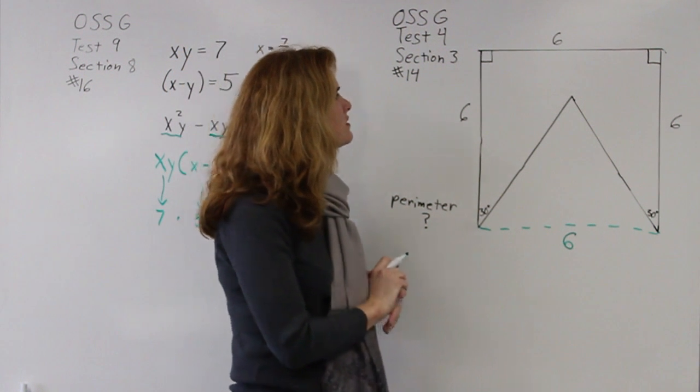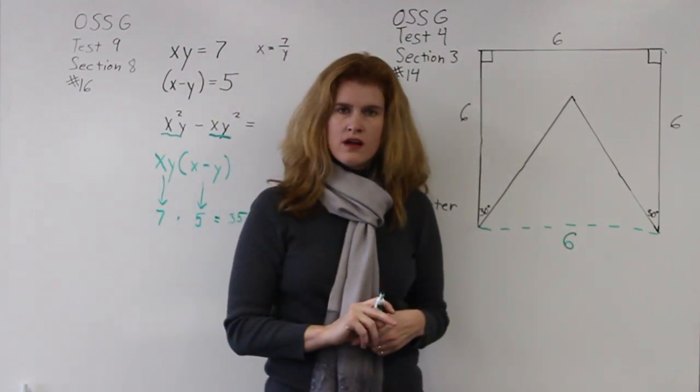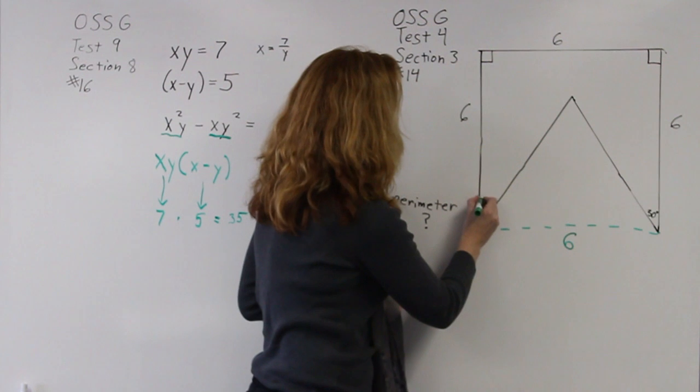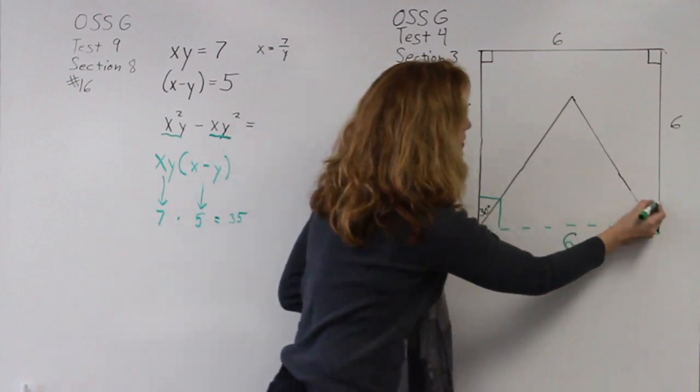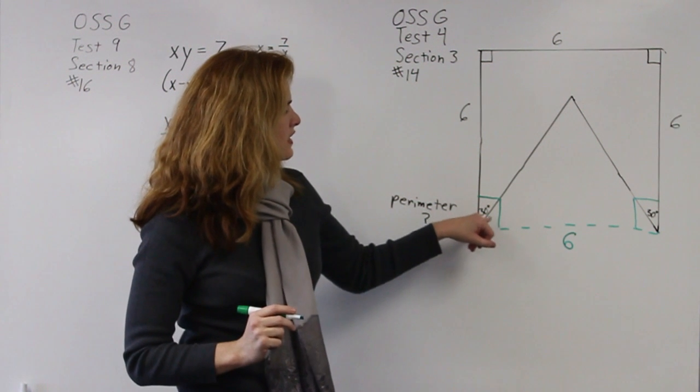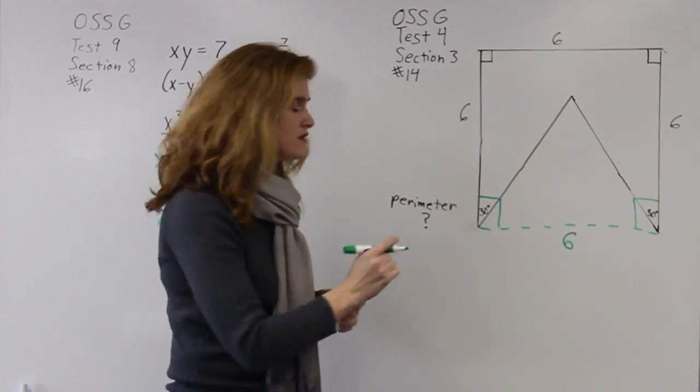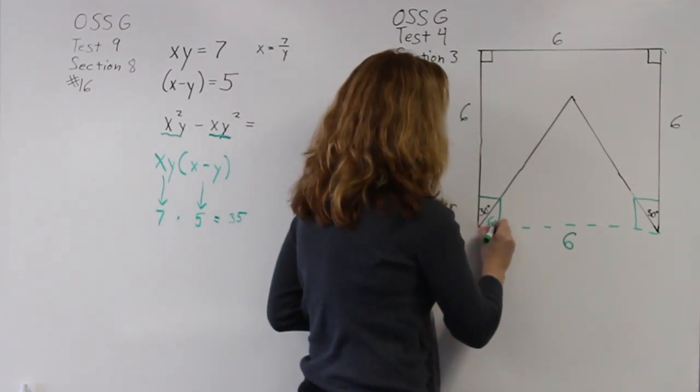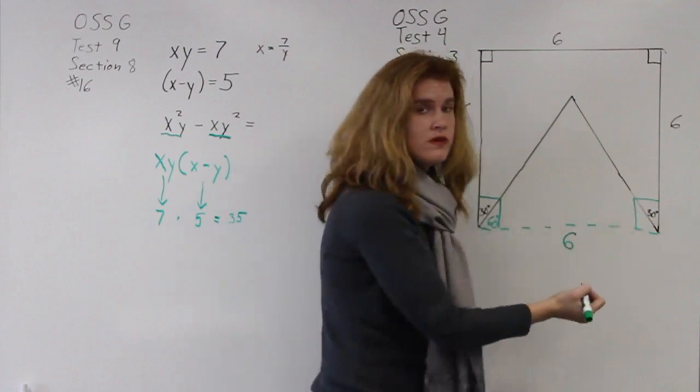I also know that the angles of a square are 90 degrees. So because this angle is 30 degrees, I know that the angle next to it has to add up to 90 degrees so it would be 60 degrees. The same is true of this angle as well.